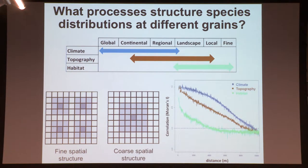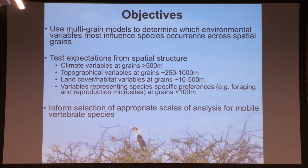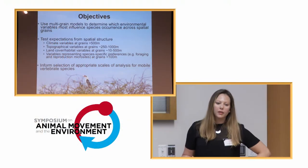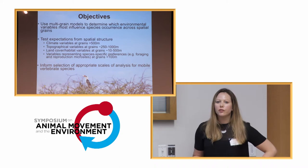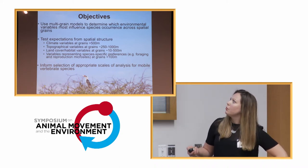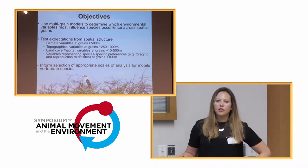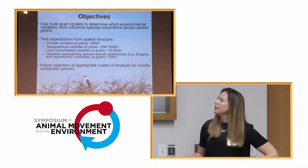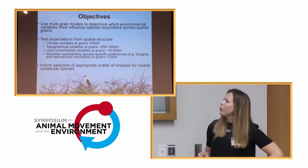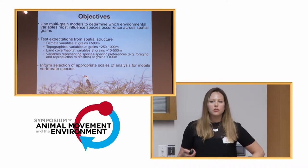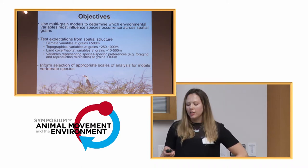I'm going to address these questions of scale dependence and species-environment relationships using a series of multi-grain models of species distribution, with a study system of two related hornbill species in Africa. We're going to test these expectations from spatial structure and see whether scale dependence in species-environment relationships adheres to or does not adhere to these expectations, and whether we can use this information to build more accurate and informative models of species distributions and obtain inferences about ecological niche dynamics.